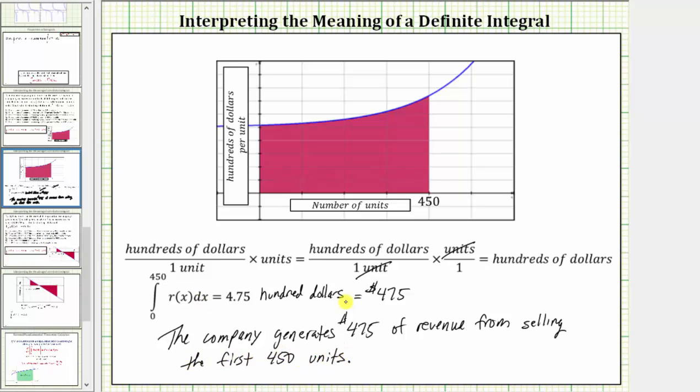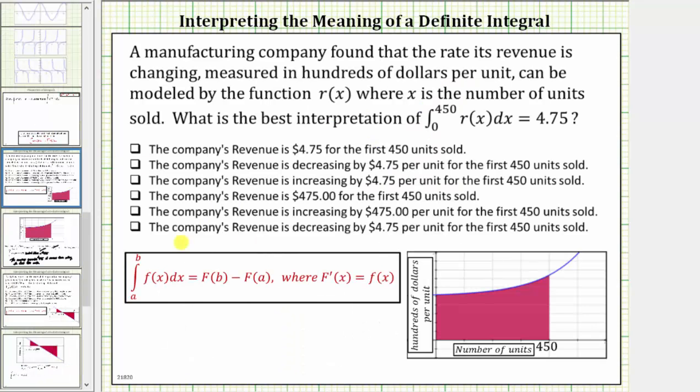Before we select our answer though, let's also interpret this using the fundamental theorem of calculus stated here. For our definite integral, we have the integral of r(x) from 0 to 450 is equal to R(450) minus R(0), which we know is equal to 4.75. And remember, big R is the antiderivative of little r, which means the derivative of big R is equal to r(x).